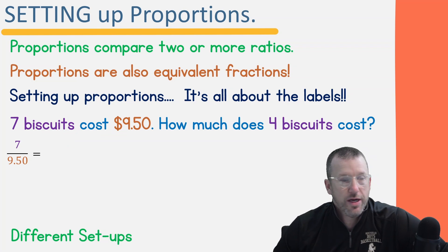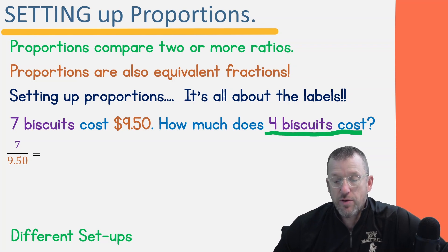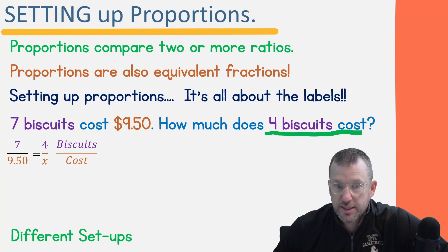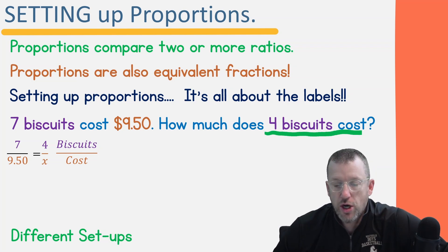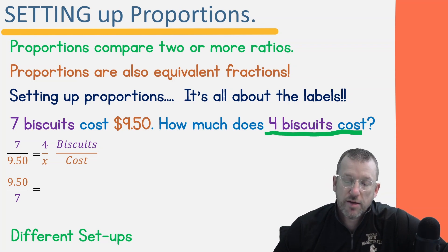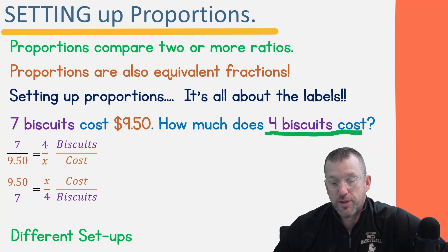We set that equal to whatever we're trying to solve. We know we have four biscuits but we don't know how much it costs. When I say it's all about the labels — the top of both fractions is biscuits, so we put them across from each other, and the bottom of each ratio is the cost. You can also flip it: $9.50 per seven biscuits, and the unknown cost over four biscuits — cost on top, biscuits on the bottom.